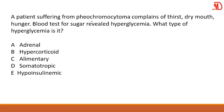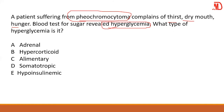A patient suffering from pheochromocytoma complains of thirst, dry mouth, and hunger — signs of diabetes. Blood sugar level shows hyperglycemia. Pheochromocytoma is a tumor in the adrenal gland — specifically in the medulla of the adrenal gland — causing adrenal tumor or pheochromocyte tumor hyperglycemia. The answer is A.